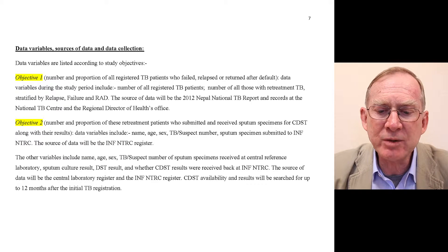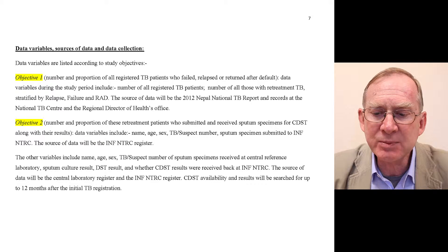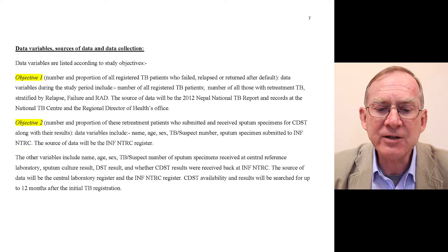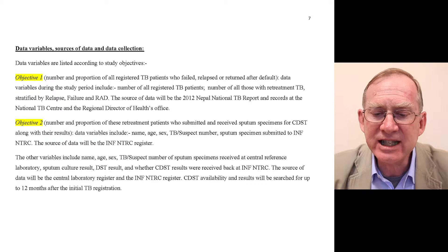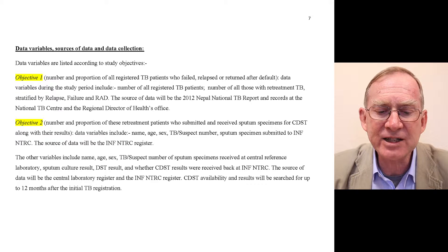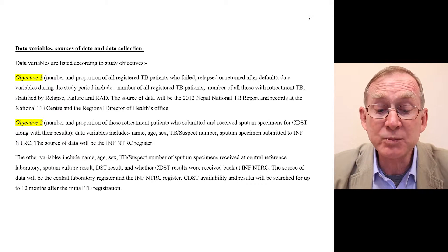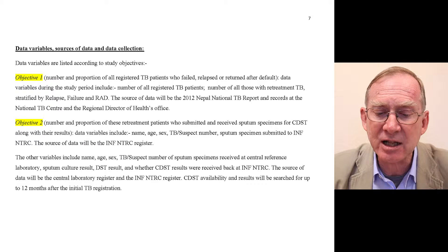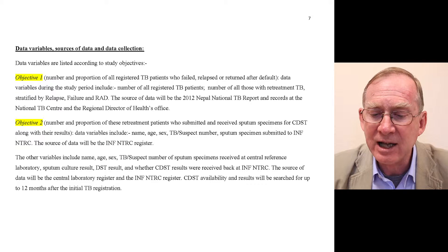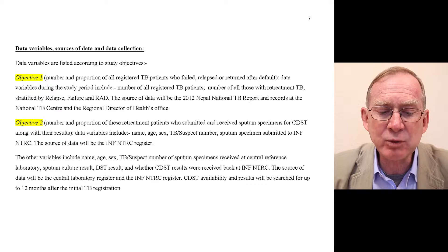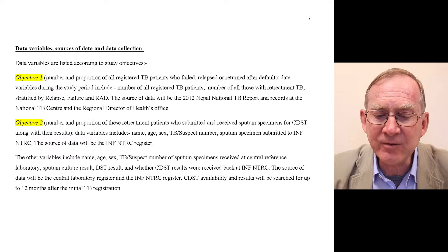Objective two — the number and proportion of retreatment patients who submitted and received sputum specimens for CDST along with their results. Data variables include name, age, sex, TB suspect number, and sputum specimens submitted to INF-NTRC; source of data is the INF-NTRC register. Additional variables include name, age, sex, TB suspect number of specimens received at the central reference laboratory, sputum culture result, DST result, and whether CDST results were received back at INF-NTRC. Source of data will be the central laboratory register and INF-NTRC register.